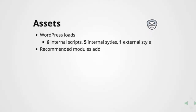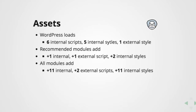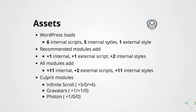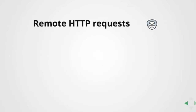For assets: plain WordPress loads six internal scripts, five internal styles, and one external style — the Google Fonts. If you add all recommended modules, that's plus two scripts and plus two styles. If you have all modules, that's plus 13 scripts and plus 11 styles — which is actually quite a lot. The most assets are being added by infinite scroll, Gravatars, and Photon.